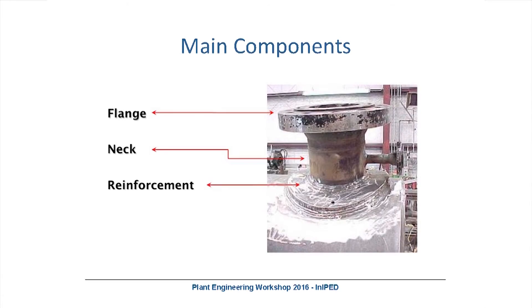A typical nozzle configuration is the one we are seeing on the screen. We have the flange element, which is the connection element between the equipment and the pipeline. As you all know, this could be standard — the preferred case — or could be non-standard; we are going to be discussing when that could happen. We have the nozzle neck, which normally is made out of a standard pipe, and we have the reinforcement plate.